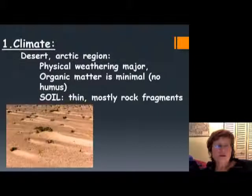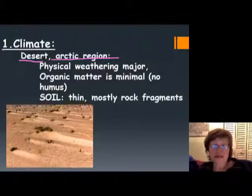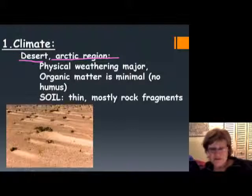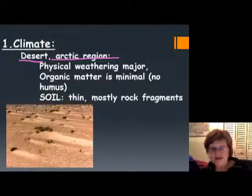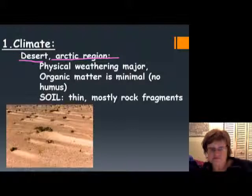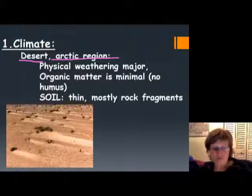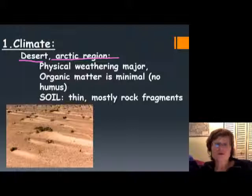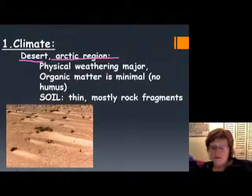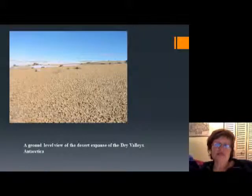If you are in the desert or in Antarctica or the arctic region, you mostly have physical weathering. In those areas you don't have much rain, so there will be very low chemical weathering. Organic matter is also very low — there's very little living things around — so the soil is going to be very thin, mostly rock fragments, with no humus or very minimal humus.